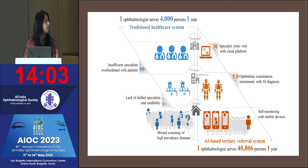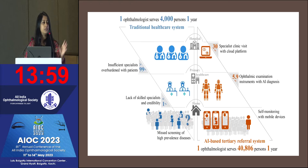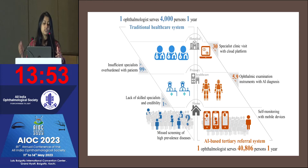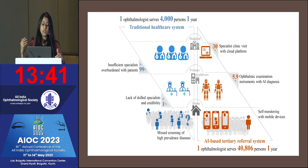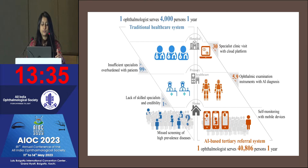It's a beautiful chart showing that in a traditional healthcare system, one ophthalmologist can cater to 4,000 people in a year. However, when we integrate the traditional healthcare system and the AI-based tertiary referral system — as Dr. Natarajan has beautifully shown with his forest example — when we combine that, we can actually serve more than 40,000 people per year. That is a 10 times increase.